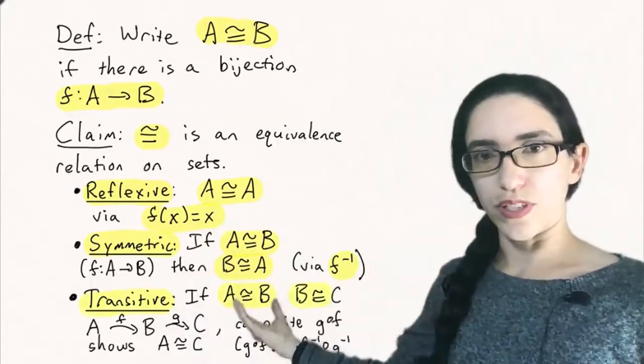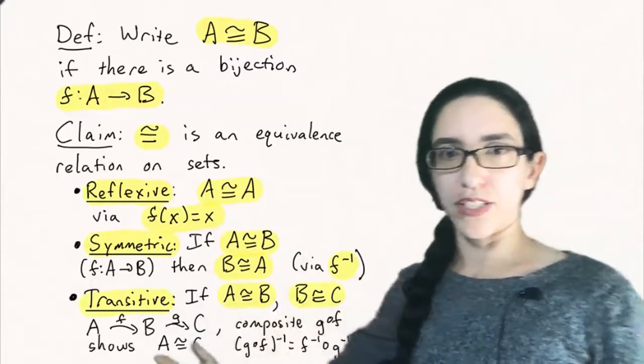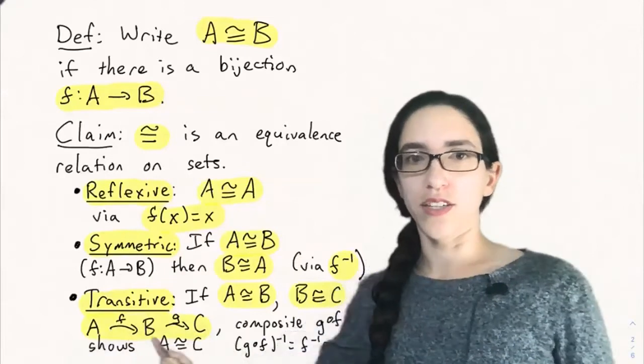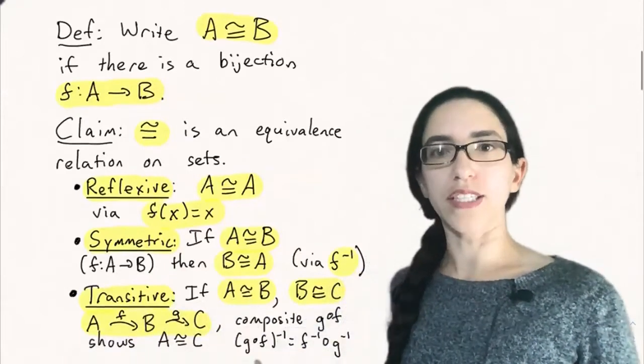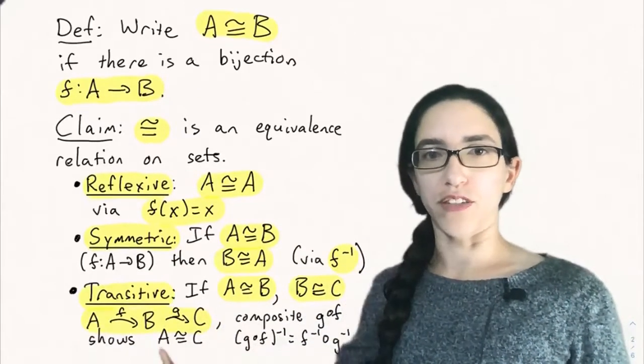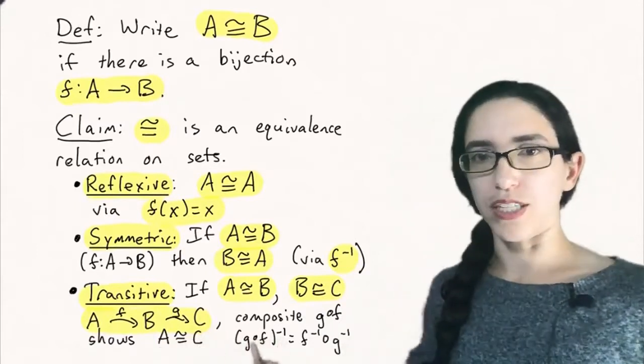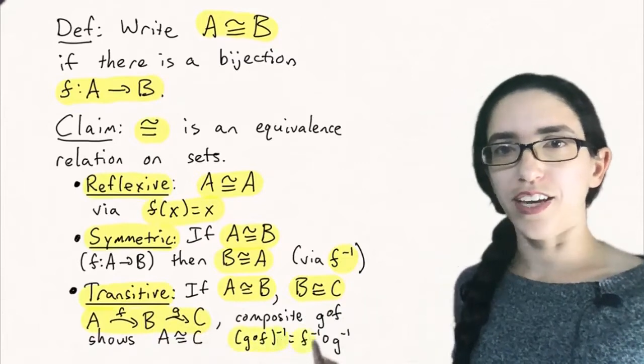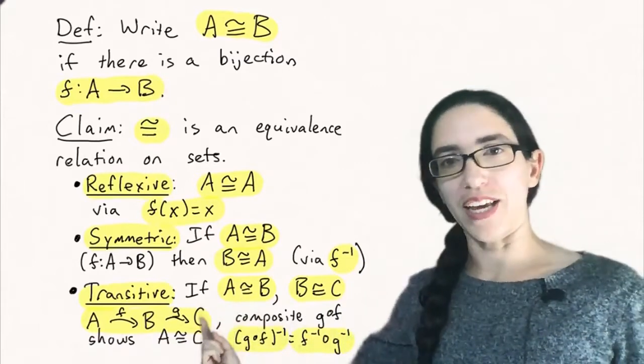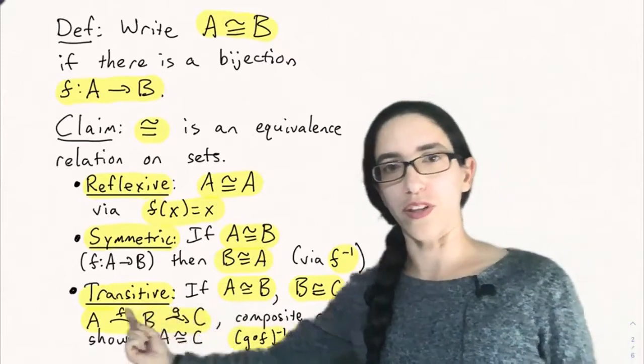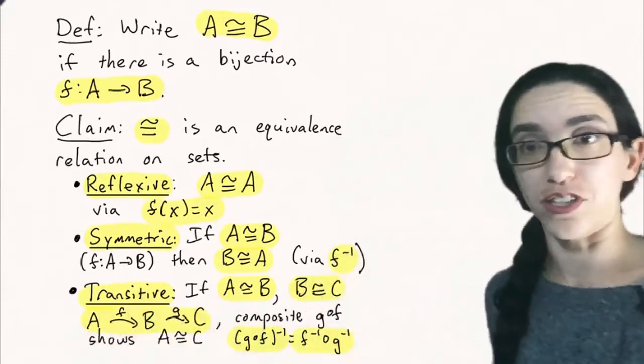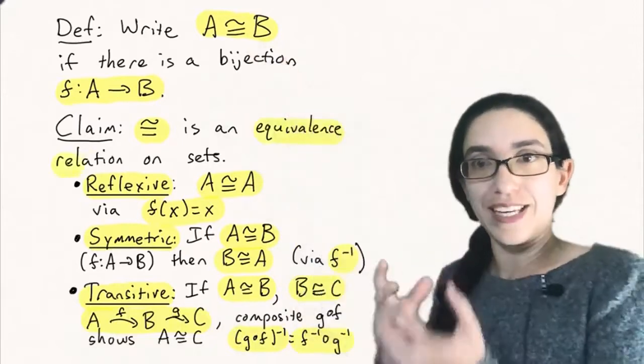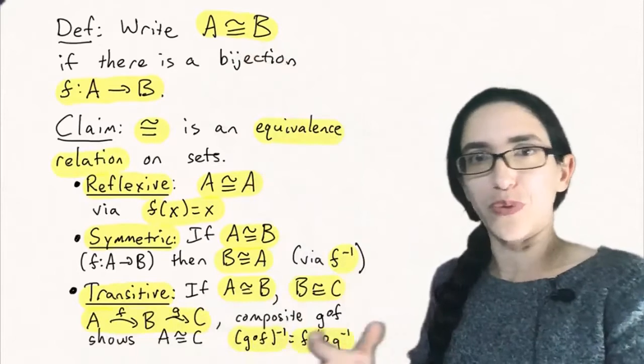is it transitive? If A is equivalent to B and B is equivalent to C, that means there's a bijection from A to B and a bijection from B to C. And we can take their composite, just follow the arrows from A all the way to C, to get a bijection from A to C. And indeed the inverse of a composite G composed with F, is what that composite function is called, is actually the inverse of F composed with the inverse of G. Meaning you follow G backwards and you follow F arrows backwards and that reverses the whole bijection. So we have an equivalence relation defined by the existence of bijections between sets.